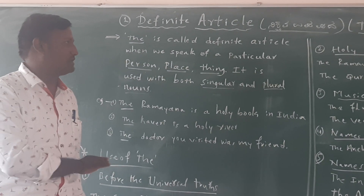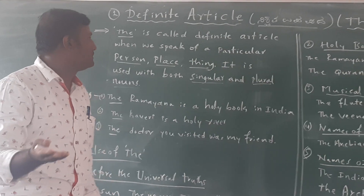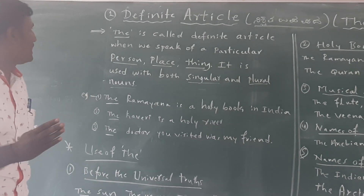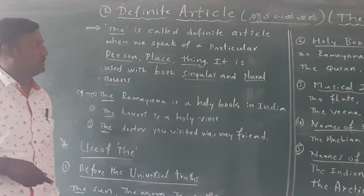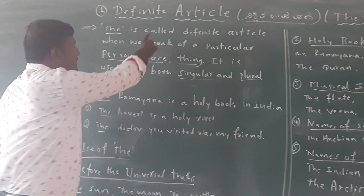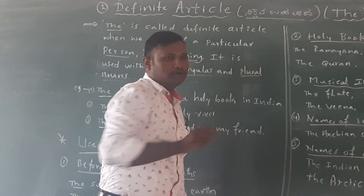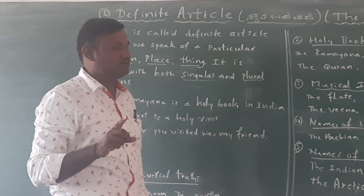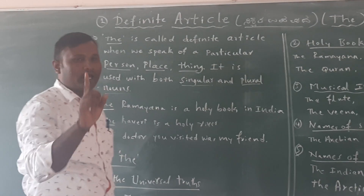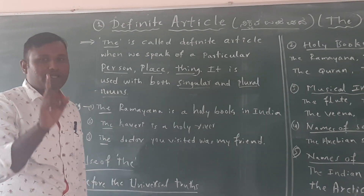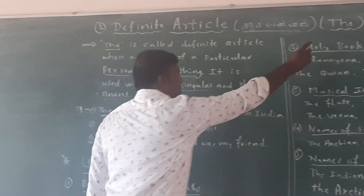Next one kind, that is the second one: definite article. There is only one article we have to use here. That is the definite article — 'the'.